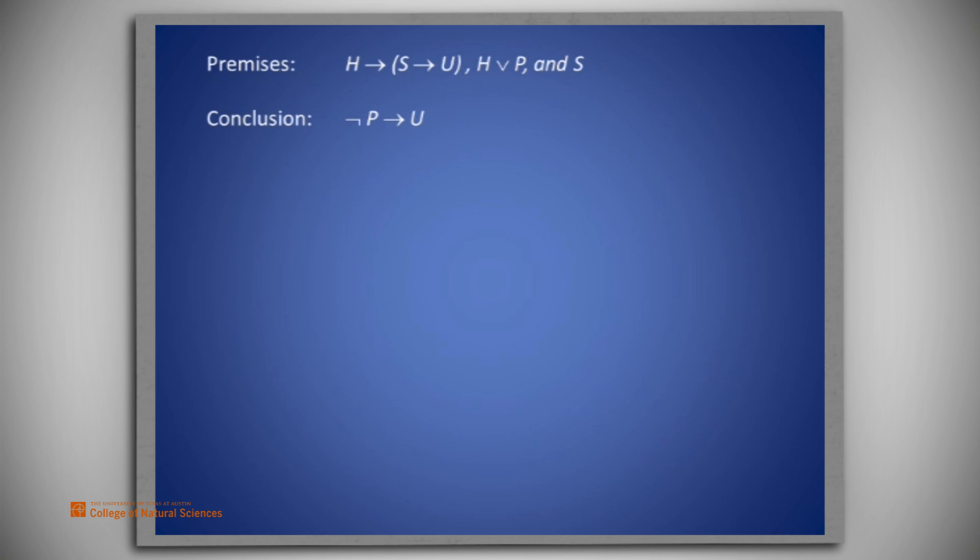So, what strategies could we use to obtain this conclusion? First, look at the conclusion, which is not P implies U.